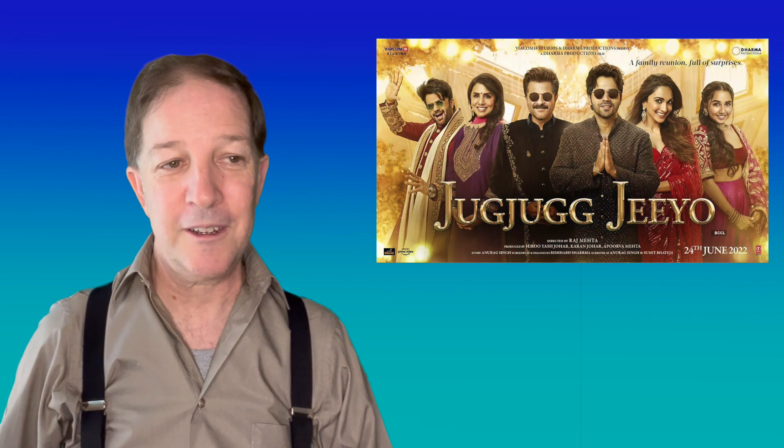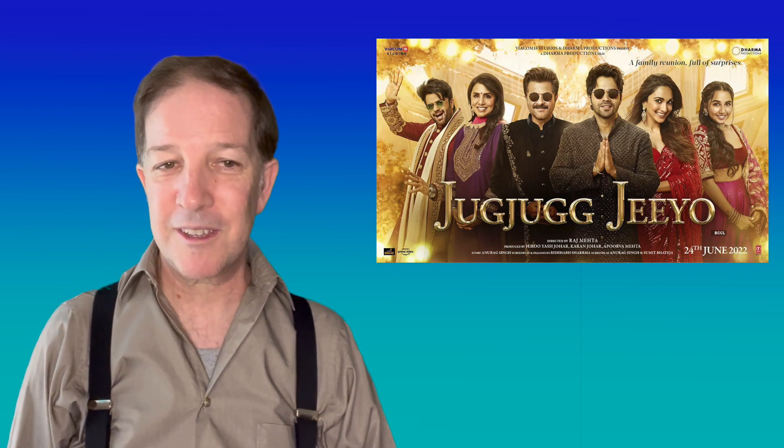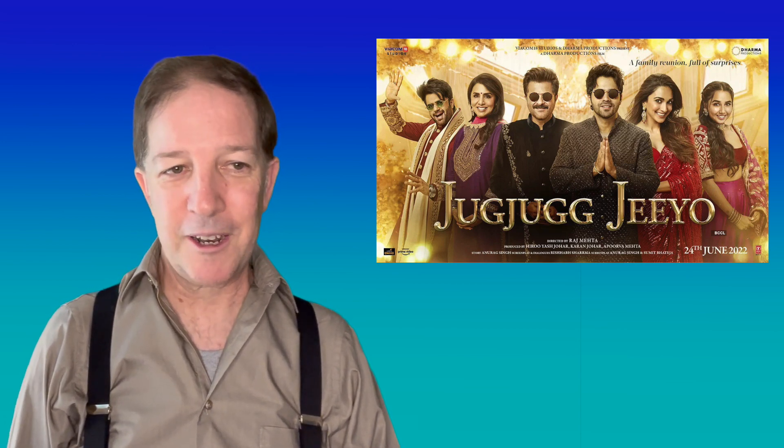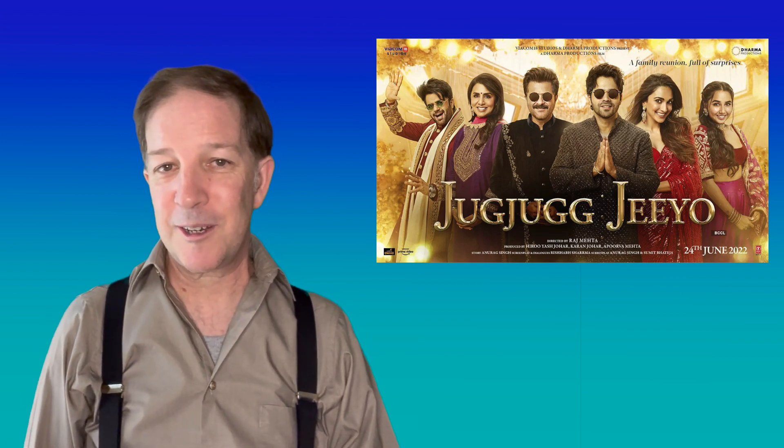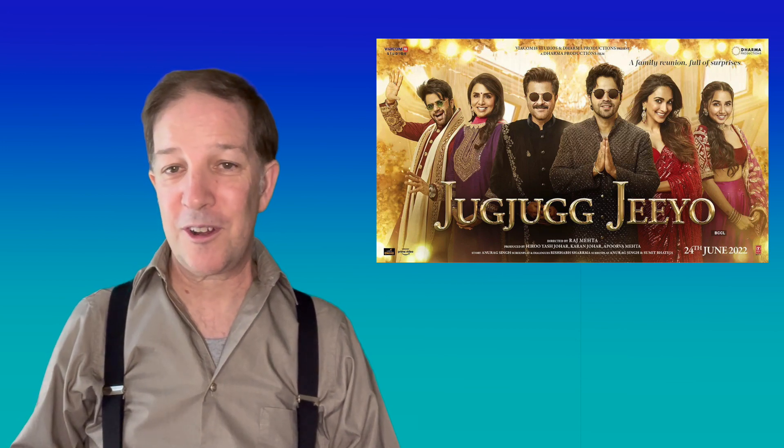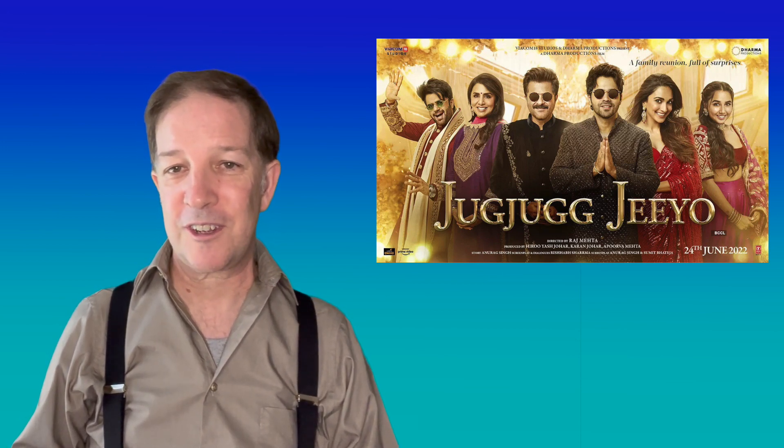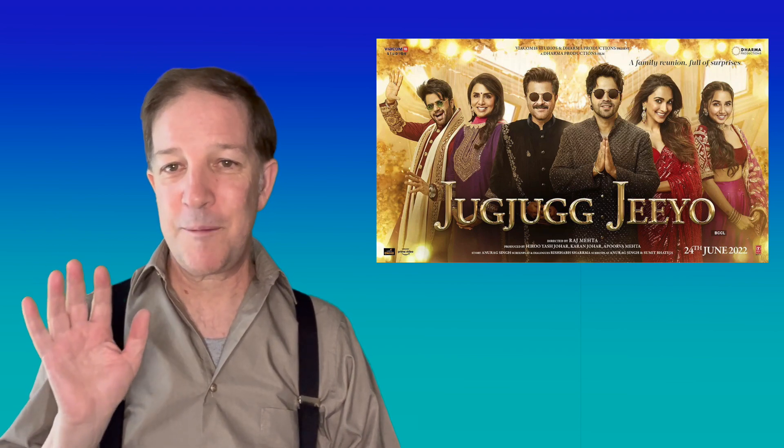Coming in at number seven, from anybody that might have distributed this, it's your guess as well as mine, a movie called Jugg Jugg Jio. It made an estimated $725,000, and it's obviously one of those Bollywood things that's probably three hours long, and it looks like it's packed with songs and dancing. So, keep away.